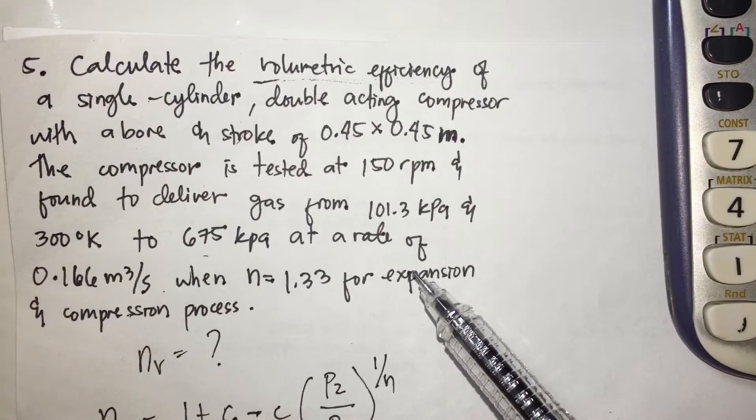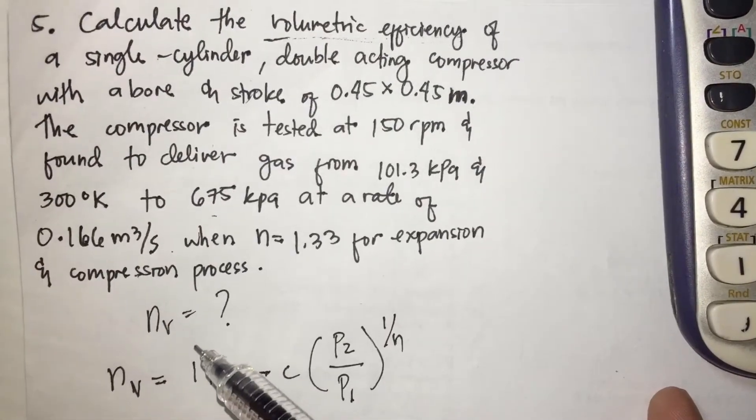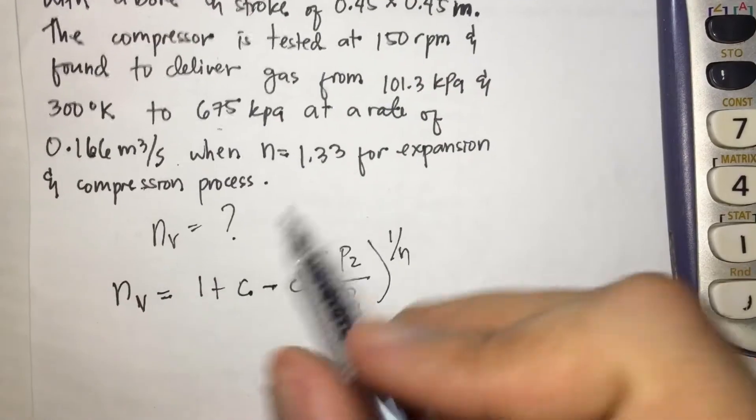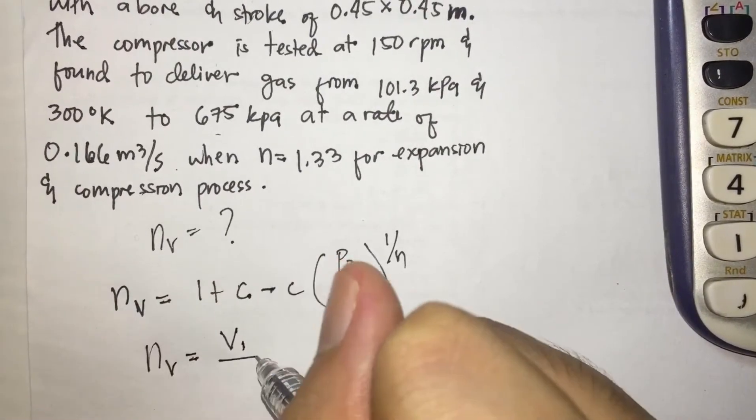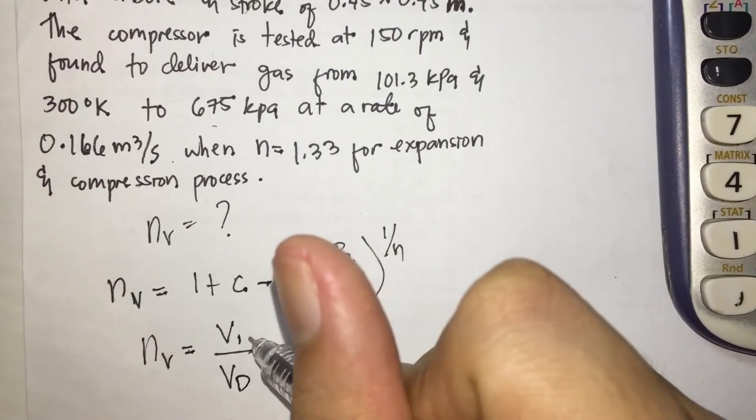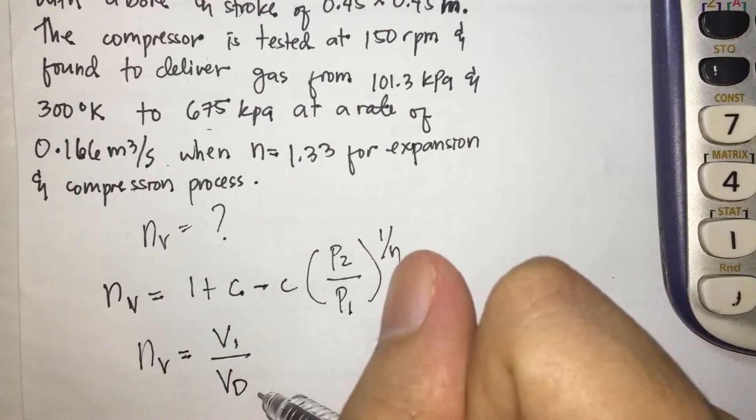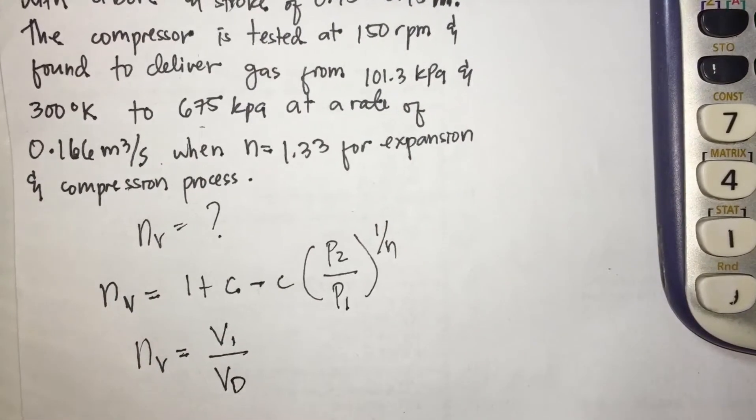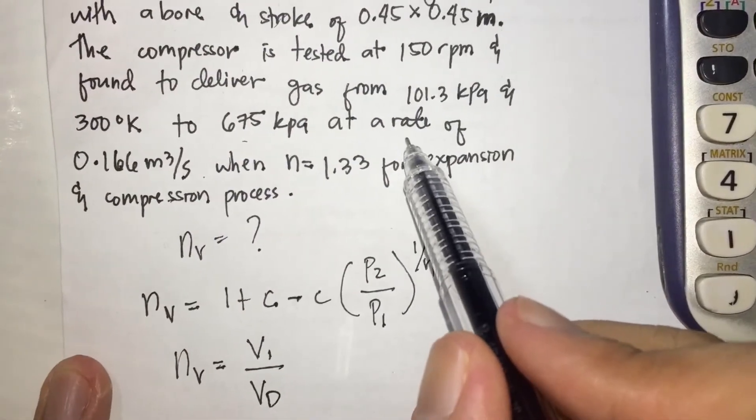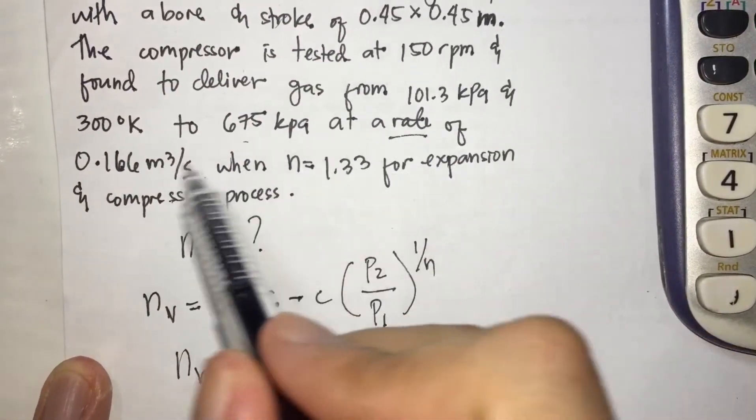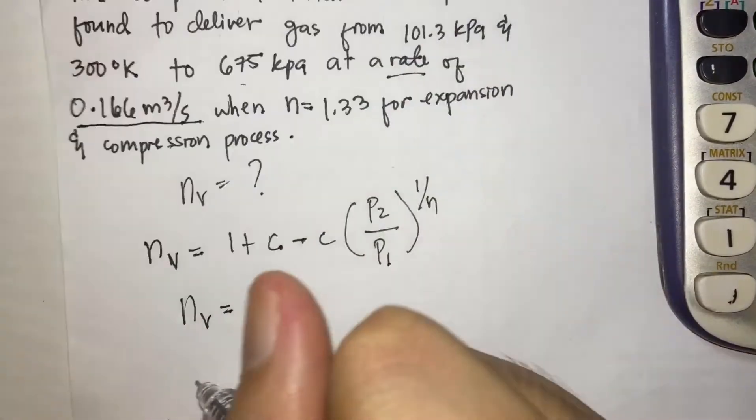So we have another formula for volumetric efficiency which is V1 over VD. Flow rate V1 over volume displacement. So V1 is actually given, at the rate of 0.166 meter cube per seconds. So V1 is 0.166 meter cube per seconds.